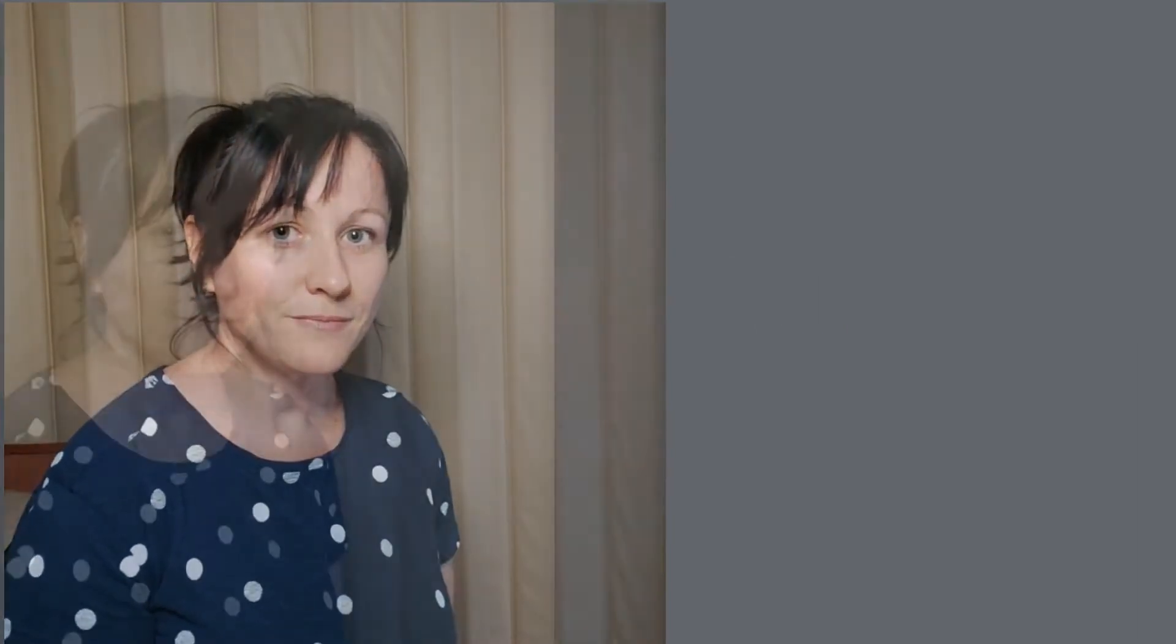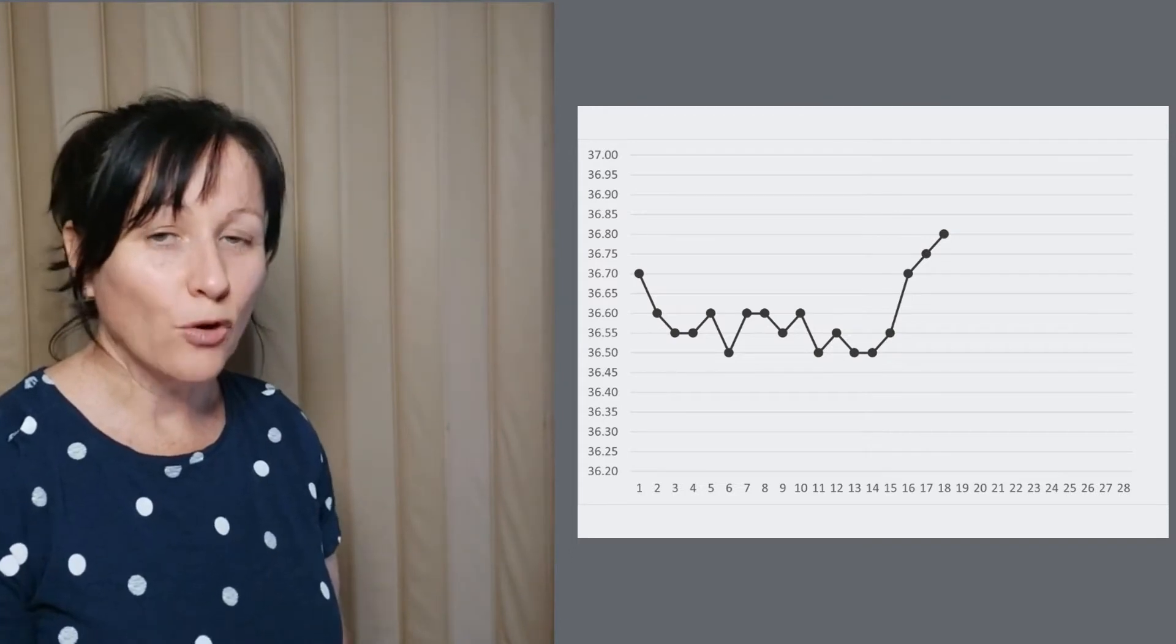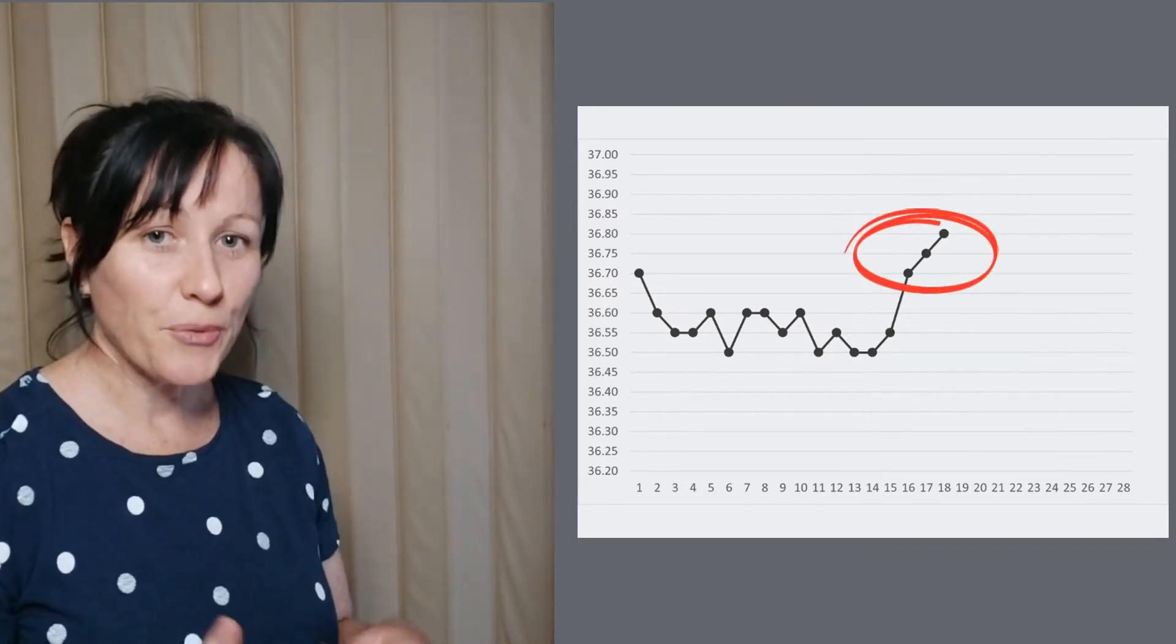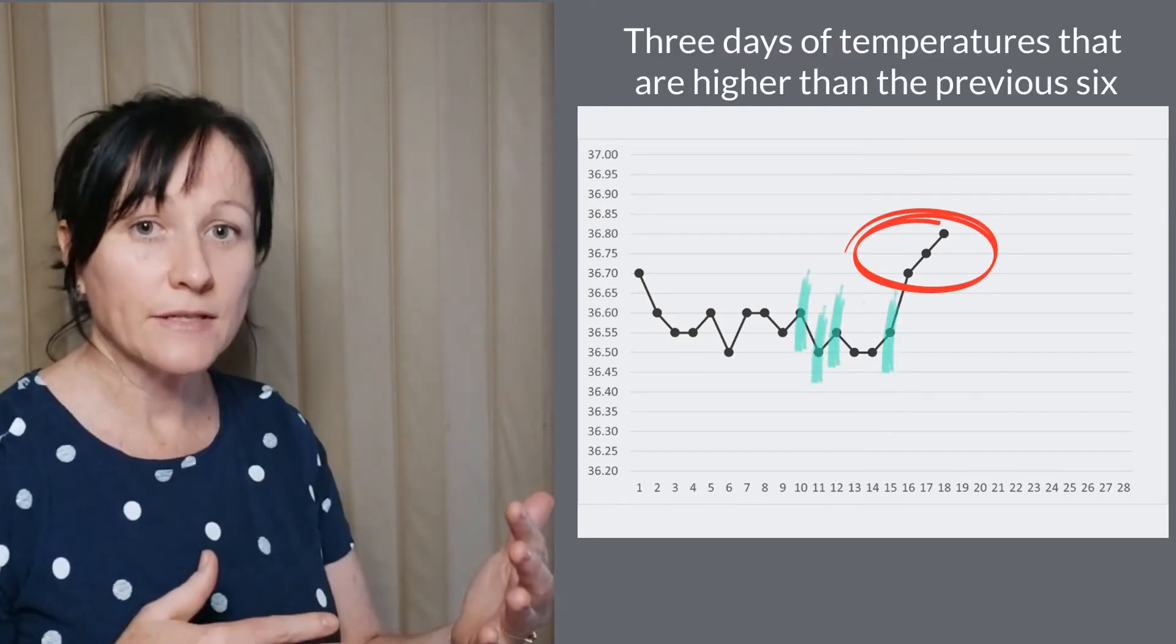We're going to use one set of calculation rules to demonstrate how to use a cover line. As you log your temperatures every day, you're watching and waiting for at least three days of temperatures that are all higher than the previous six before them.